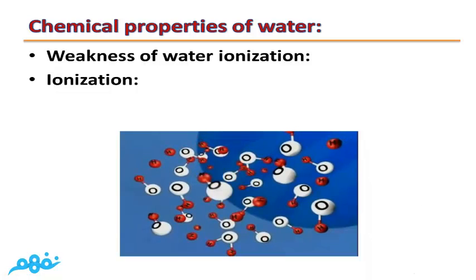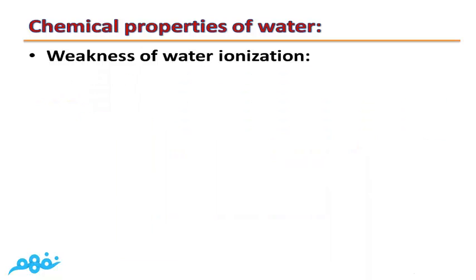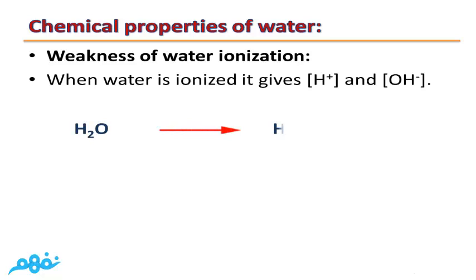What's meant by ionization? It is the process of converting the molecules of some covalent molecules into ions. When water is ionized, it gives a positive hydrogen ion and a negative hydroxide ion. One molecule of water, when ionized, gives one positive hydrogen ion plus one negative hydroxide ion.